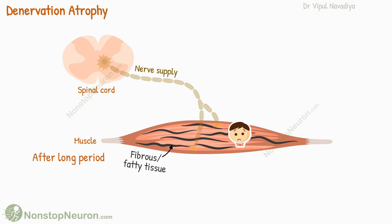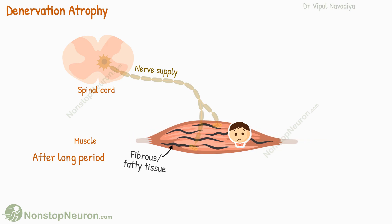Rather, the fibrous tissues that replace the muscle fibers tend to contract. This leads to a condition called contracture, which restricts the normal range of motion and flexibility at a joint.